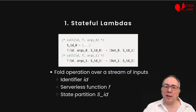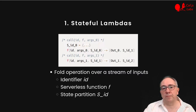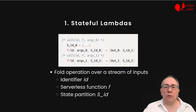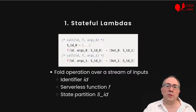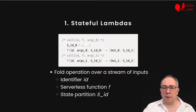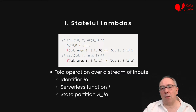The caller provides an ID to select the initial state, the target function f, and some other arguments. The framework creates the initial state SID 0 and calls f, which returns two things: some output for the caller or for other services, and the new state SID 1. This state becomes the input state for the next invocation with the same ID, serializing the calls. But the state partition is private, and stateful lambdas with different IDs can now all execute in parallel.